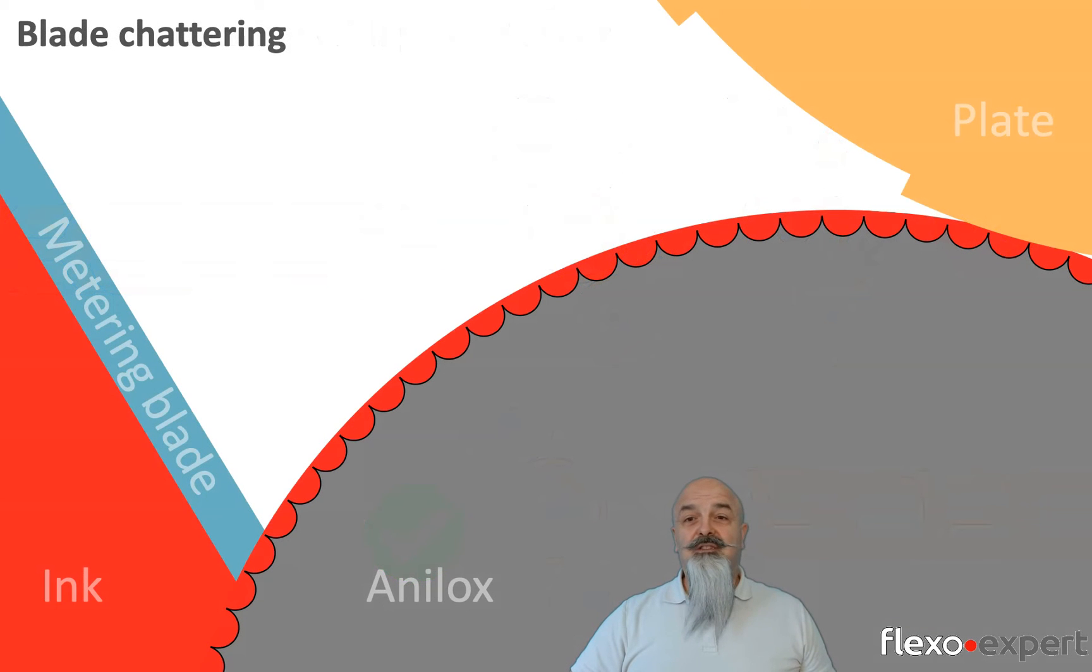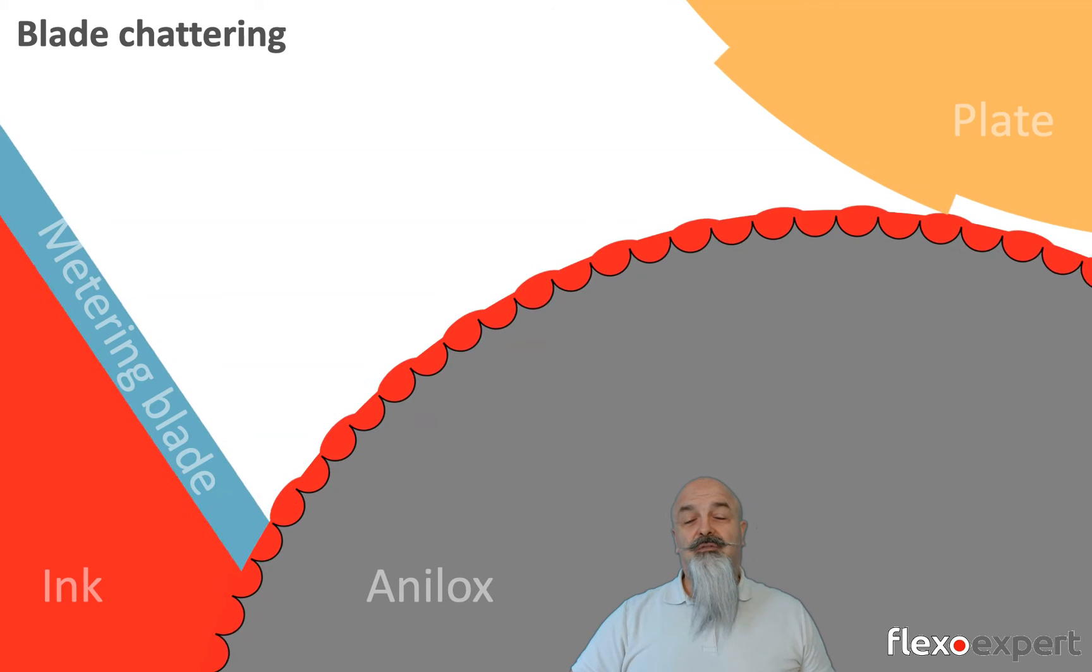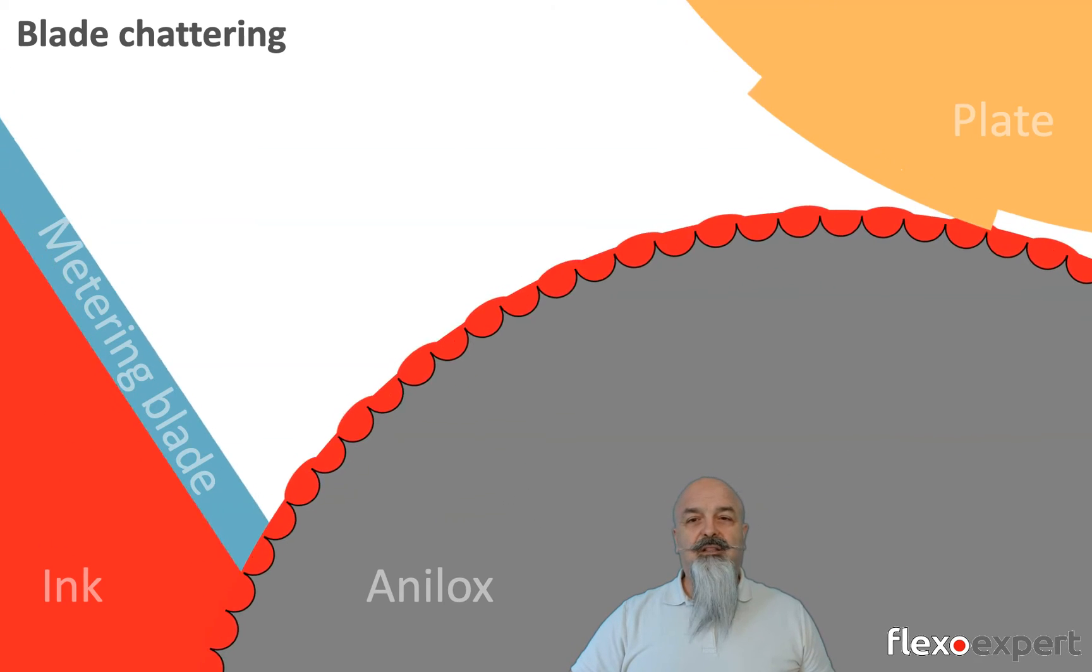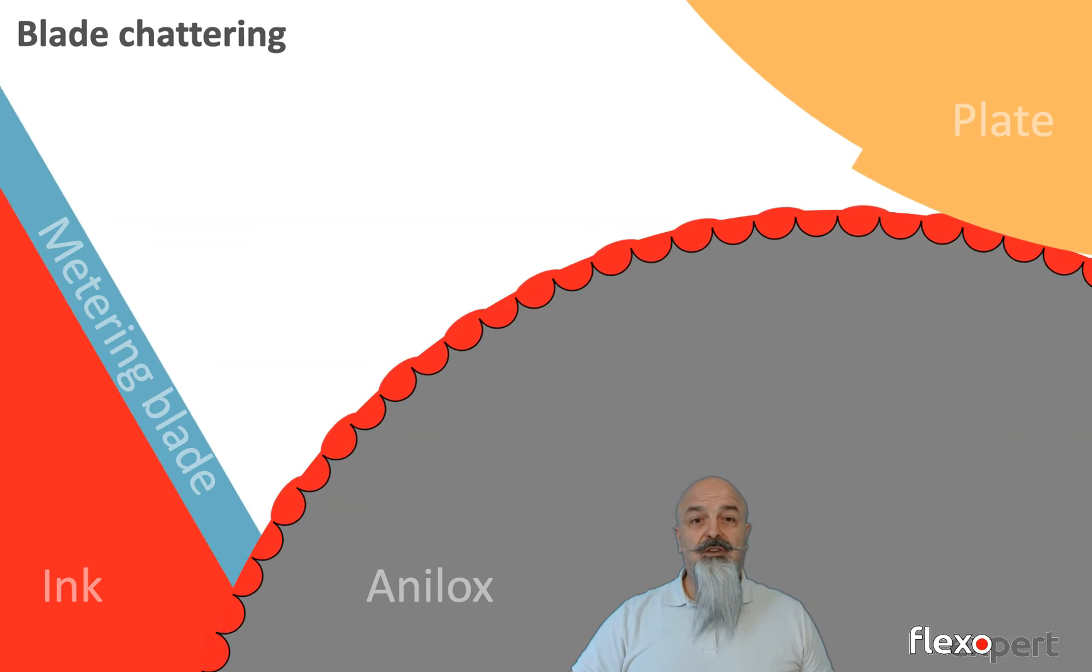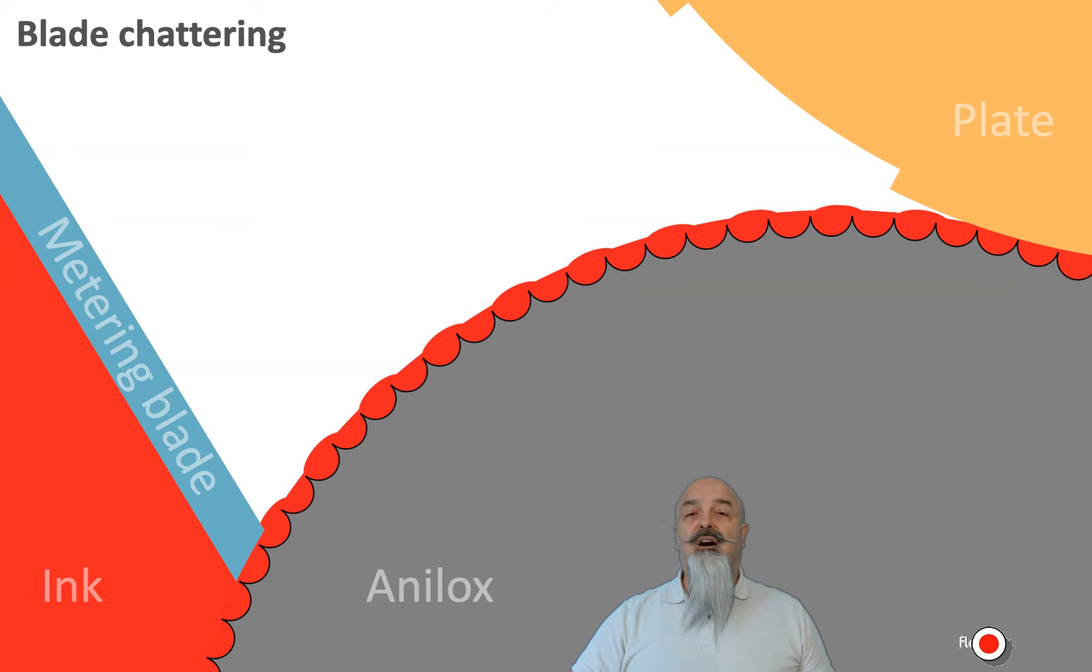Staying on the printing unit, we could have some problems related to the vibrations of the doctor blade on the surface of the anilox roll. An incorrectly polished ceramic surface, perhaps also in combination with a too high metering angle or excessive pressure of the blade, are among the typical causes of these vibrations of the doctor blade. That will produce irregularities in the ink layer that will transfer to the plate and will be visible in print.